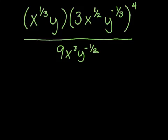With our order of operations, we deal with the parentheses first. The first set of parentheses gives us x to the 1/3 times y. There's nothing to do here — this quantity is not being raised to an exponent, there's no number in front, and no plus sign, so there's no distribution. These parentheses are entirely unnecessary; they're just showing multiplication. So I'll rewrite this as x to the 1/3 times y.